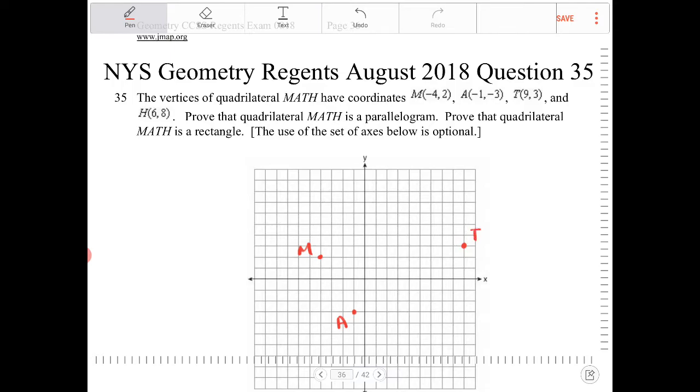And H is 6, 8. So 6, 8. So it's 2, 4, 6, and 8. Okay.